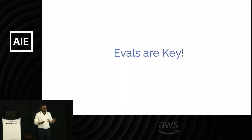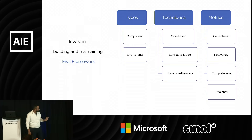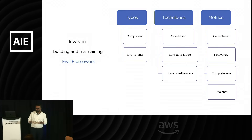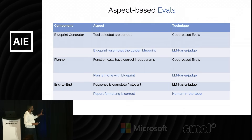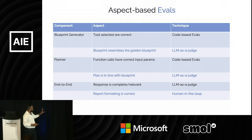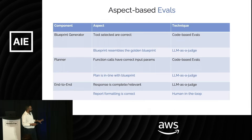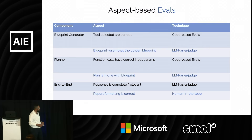None of this will work without writing proper evals. Always invest in building and maintaining your eval framework. You should have at least component-level and end-to-end evals, and use the correct techniques: code-based, LLM-as-judge, and human-in-the-loop. Write evals for the metrics you really care about. Aspect-based eval is something to think about — for example, for Blueprint, you can check whether it resembles a golden Blueprint using LLM as a judge. For tool selection correctness, use code-based evals. For checking whether a plan aligns with the Blueprint, LLM as a judge works well. For report formatting, human-in-the-loop is the best approach.